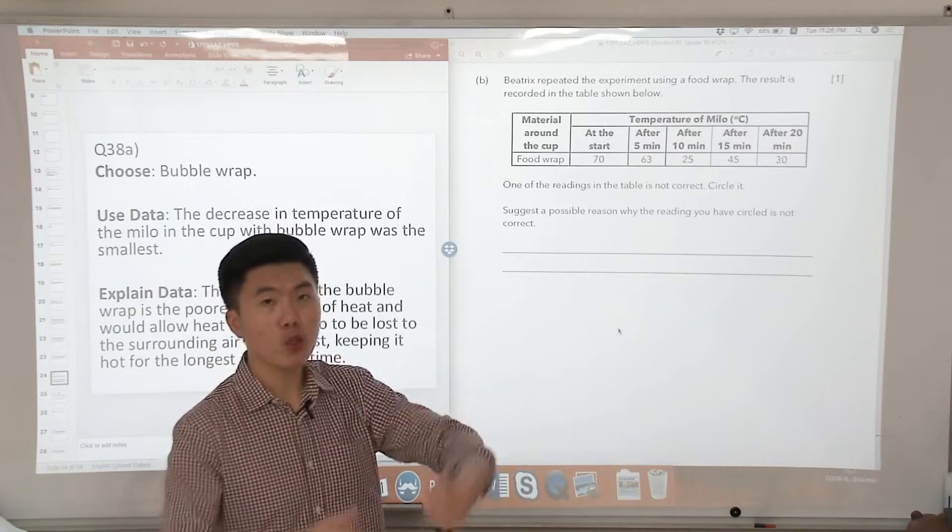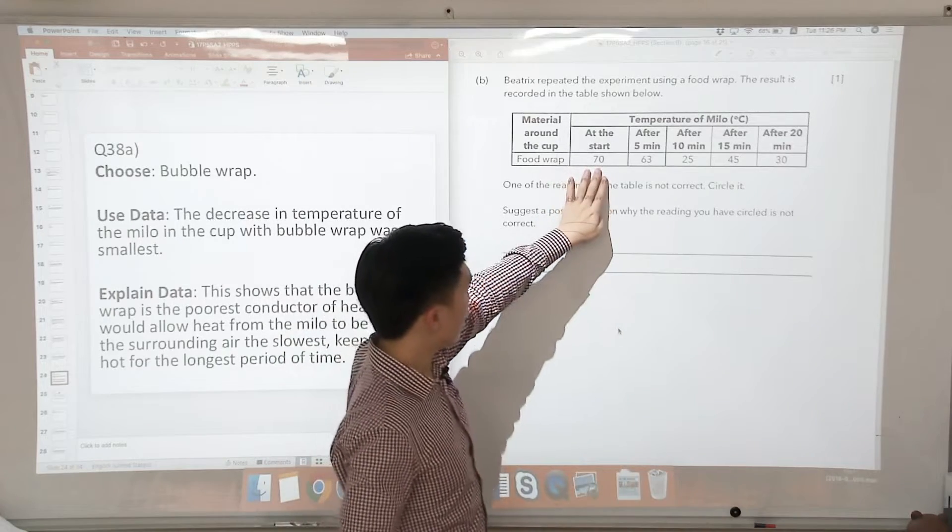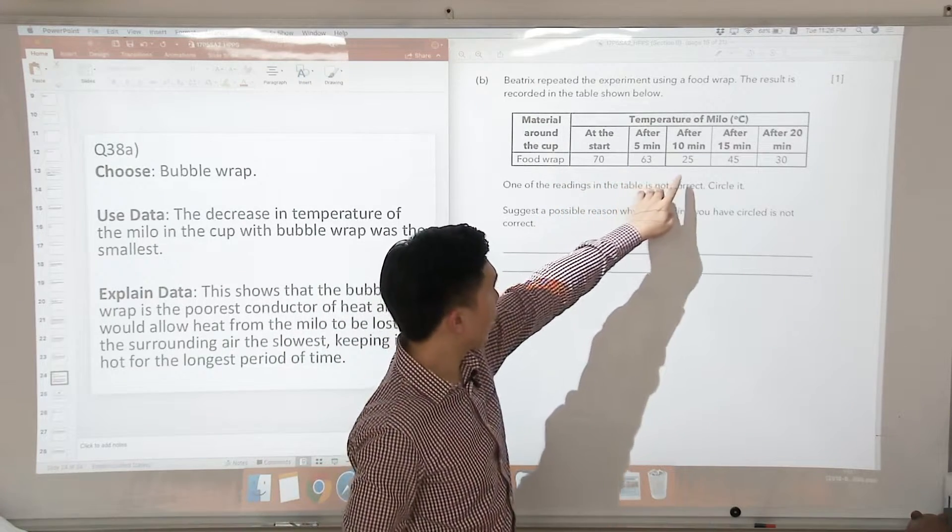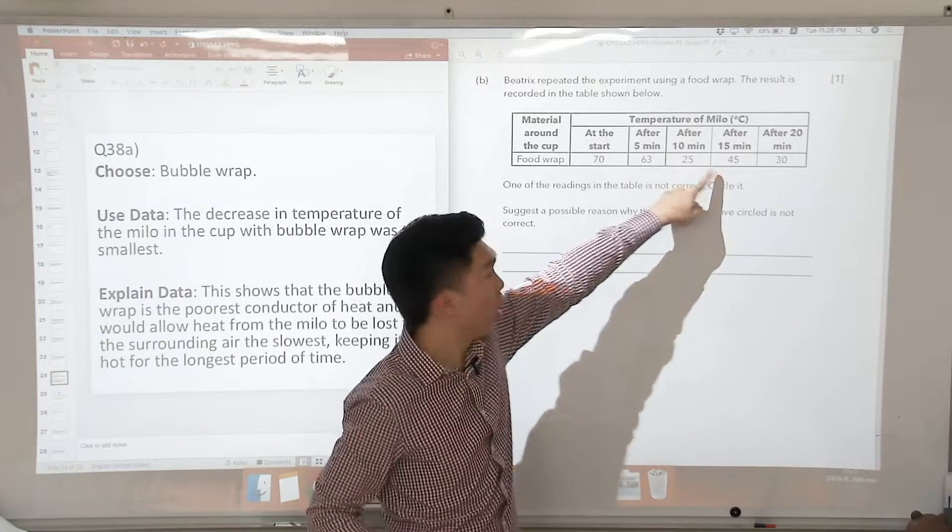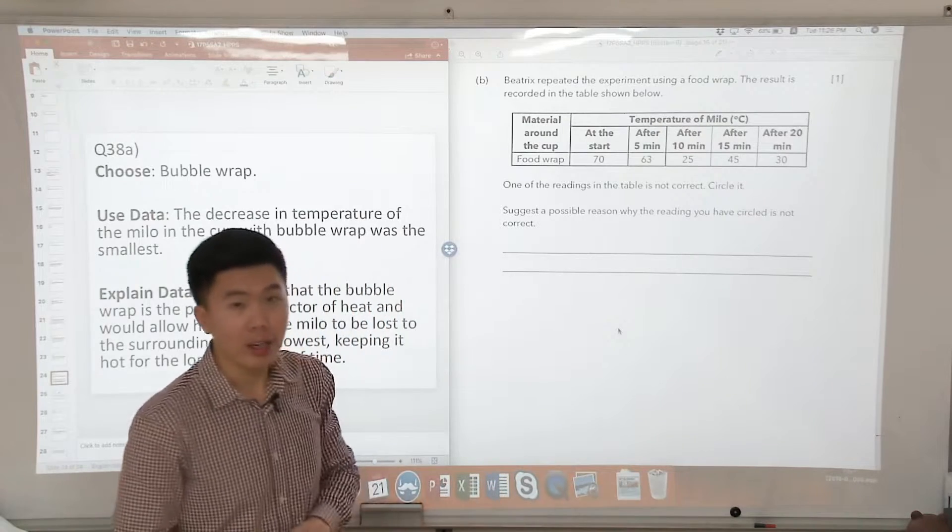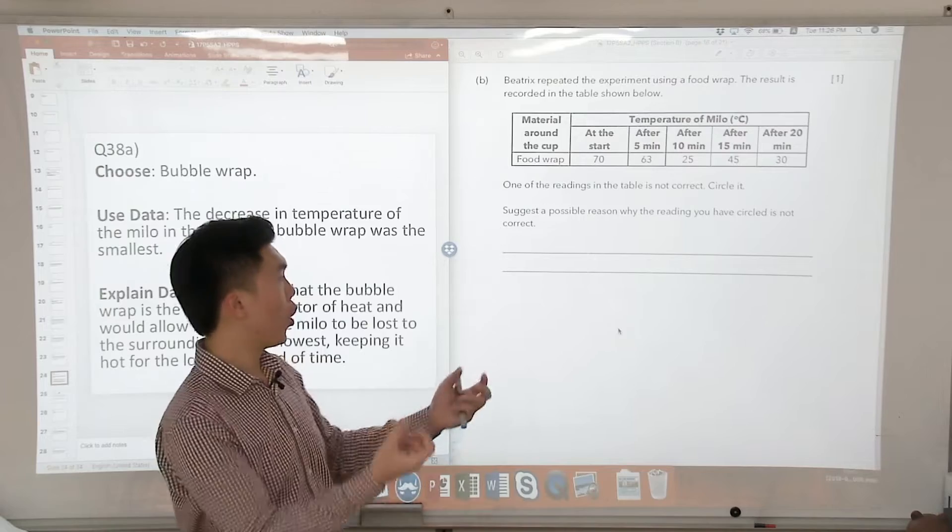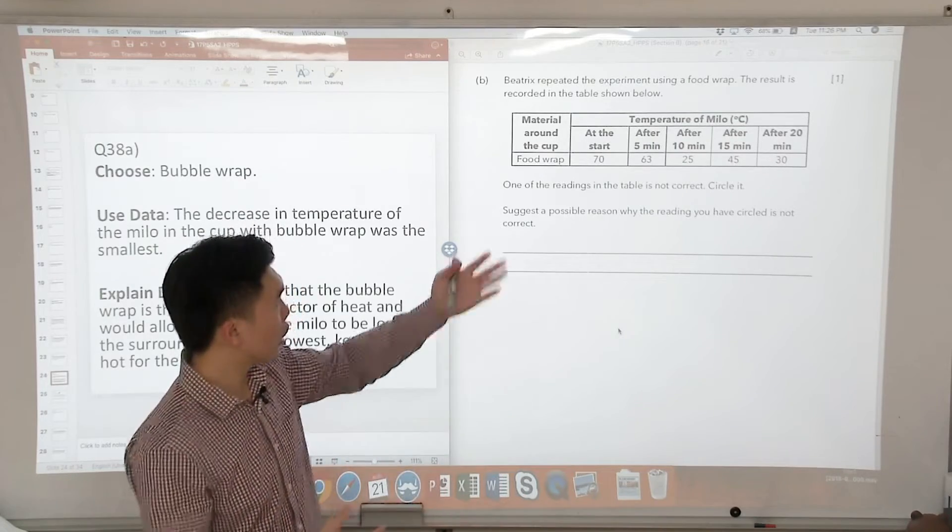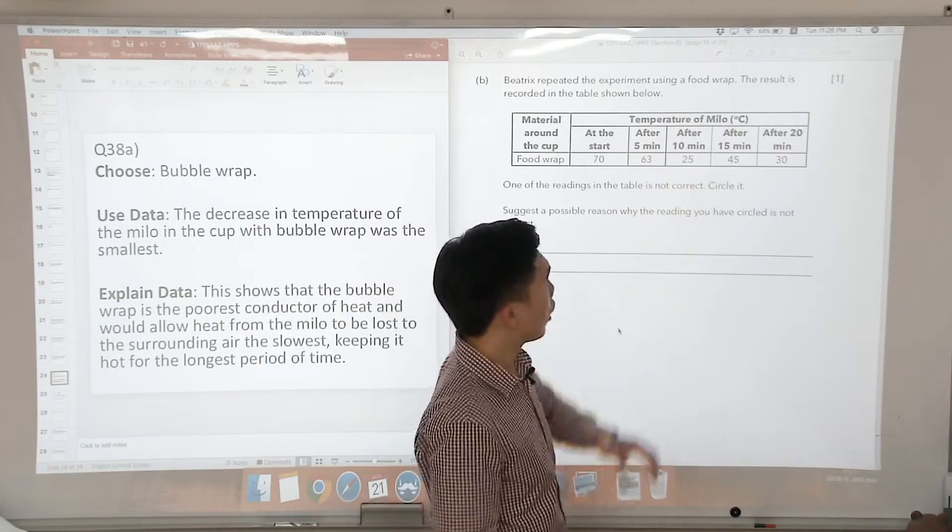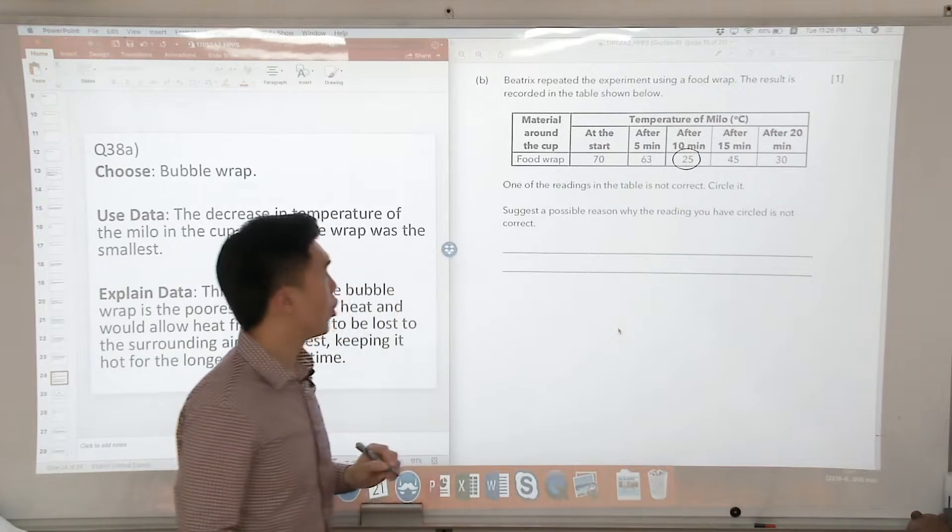So when we look at heat loss to the cooler surroundings, we expect that the temperature decreases. But if you notice: 70, 63, what is this? 25. And it goes up to 45. It is possible for 63 to decrease to 25. But since there is no heat source or constant flame that provides more heat, how can the temperature of the Milo increase? It's not possible. So this is likely to be the error.